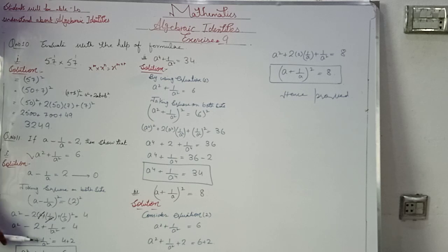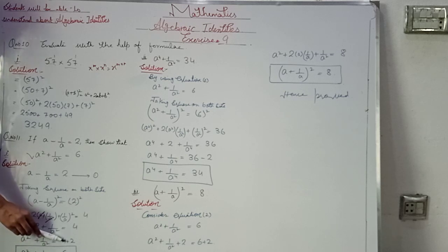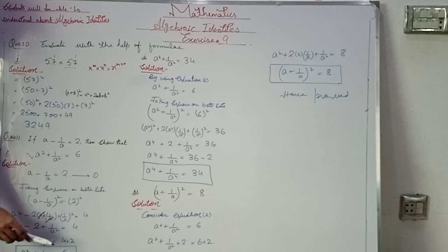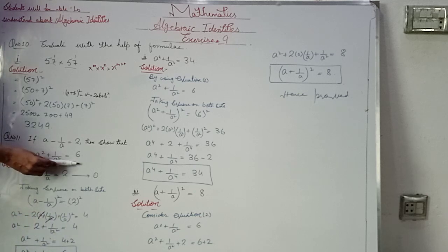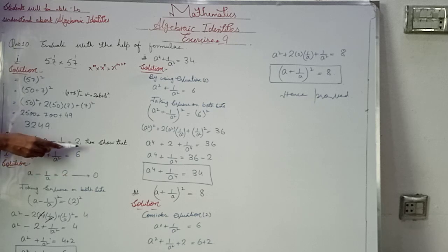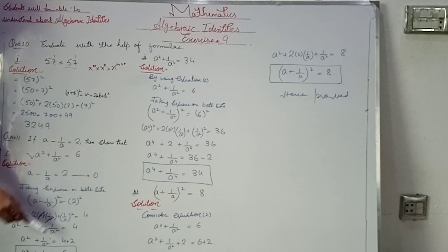Expanding, we get a² − 2·a·(1/a) + 1/a² = 4, which gives a² + 1/a² − 2 = 4, and therefore a² + 1/a² = 6. This is what we had to prove. Hence the first part is proved.